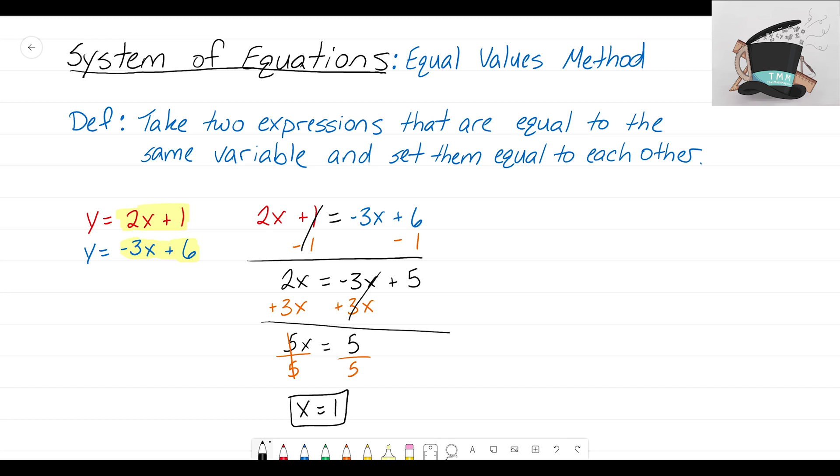Hey, I think that is the exact same x value that we got in our previous video, so we're doing good. We're showing that you could either graph these or you could use this equal values method. Now we know what x is—x is 1. Now we're not done yet. Remember, we're trying to find our solution, and our solution is always an ordered pair, and that ordered pair is an x, y coordinate.